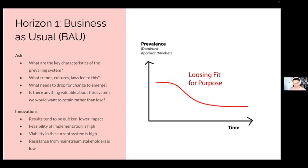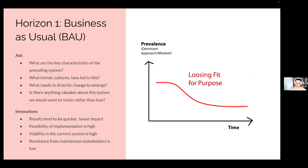Before unleashing you into these groups, I just want to go through each horizon one more time to queue up the conversation. For the first group in horizon one, this is business as usual. The conversation we want you to have covers things like: what are the key characteristics of the prevailing system? What trends, cultures, laws, or anything has led to this current system? What needs to drop for change to actually start to emerge? Is there anything about the system that we would want to retain because it's important and valuable?